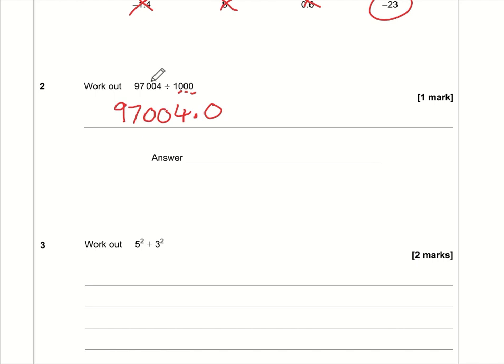So one, two, three - it will sit between the 7 and the 0. So the number or the answer will be 97.004. That zero at the end, if I put it there it's not wrong, but it just doesn't need to be there anymore.